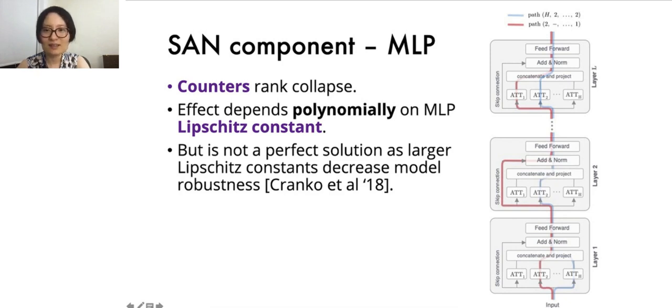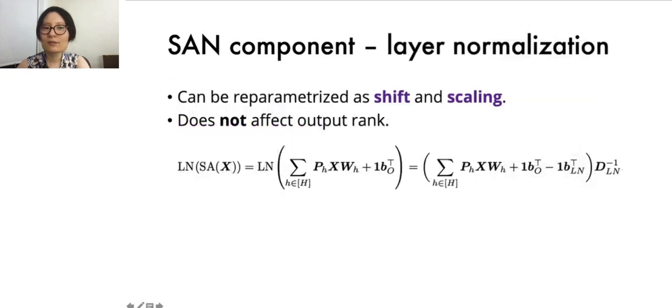But note that larger Lipschitz constants tend to decrease model robustness. Hence, adjusting the Lipschitz constant would lead to a trade-off between maintaining rank and model robustness. We also analyzed layer normalization and found that it does not have an effect on the rank, as it can be reparametrized as a shift and a scaling.